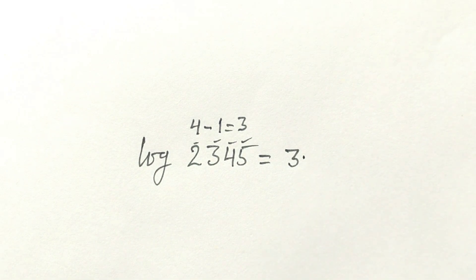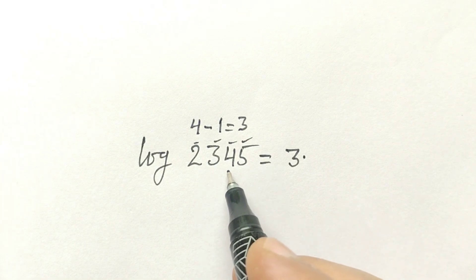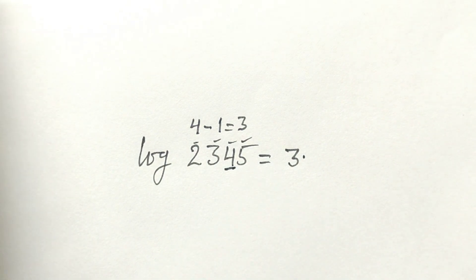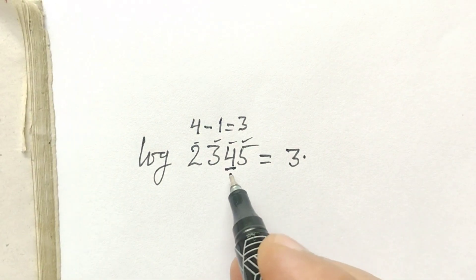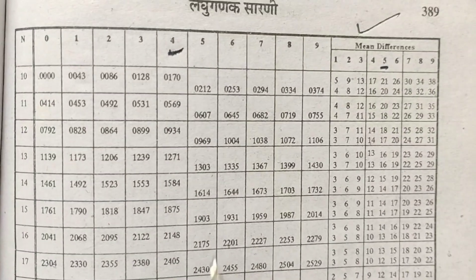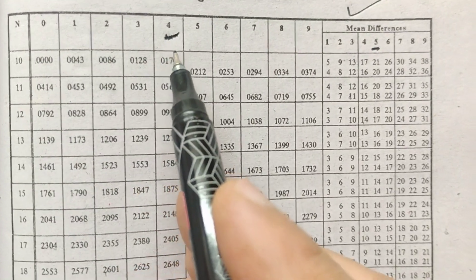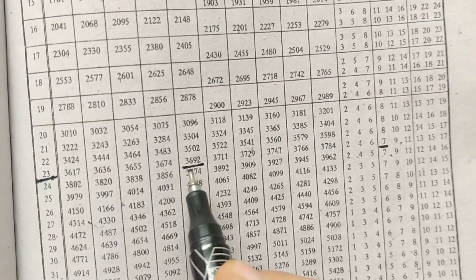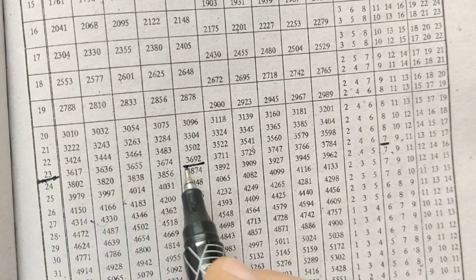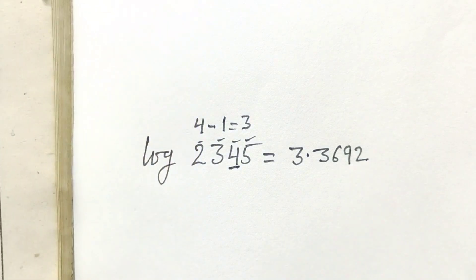Then we will make a point. Now we will see the 4th column of row 23. What is the value of the 4th column of 23? The columns are: 0, 1st, 2nd, 3rd, 4th column. The value is 3692. So here we will write 3692.